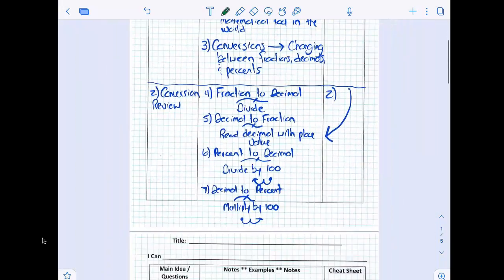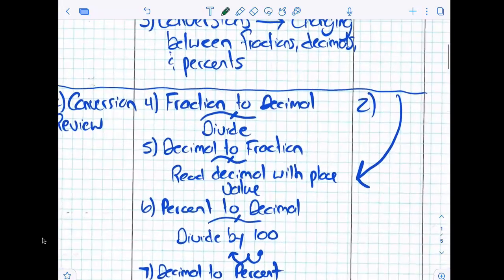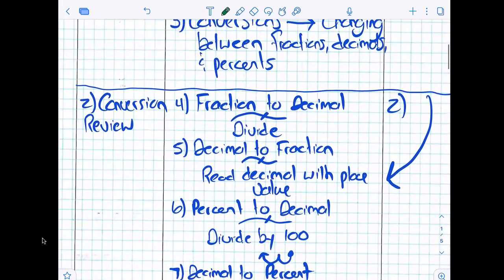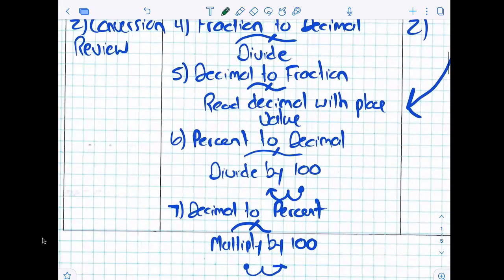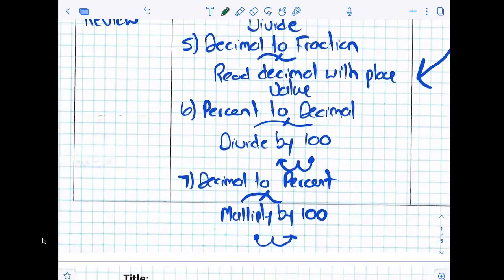Conversion review really quick. I need you guys to be fast on this one. How do you go from a fraction to a decimal? Divide! How do you go from a decimal to a fraction? Read the decimal with place value! How do you go from a percent to a decimal? Divide by 100! How do you go from a decimal to a percent? Multiply by 100!